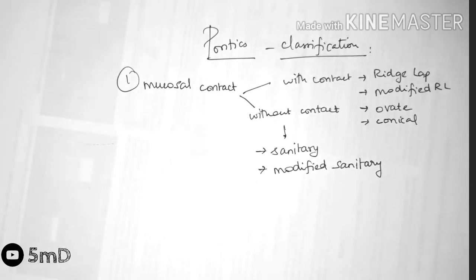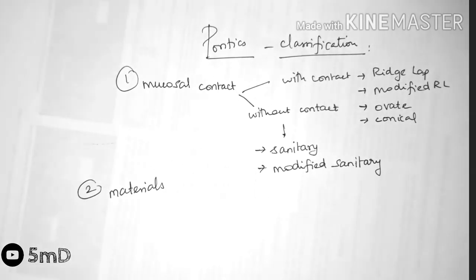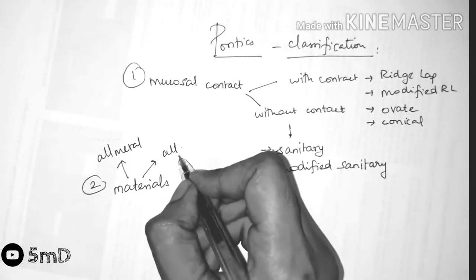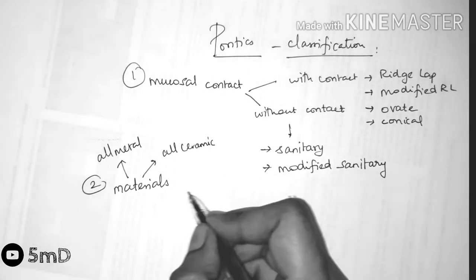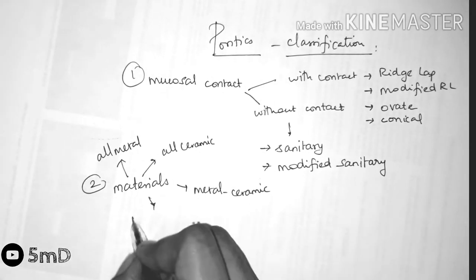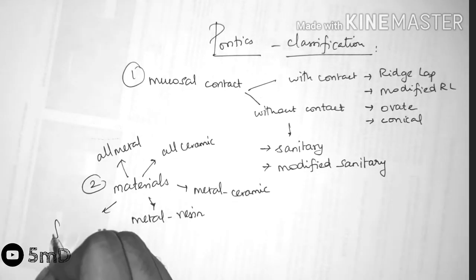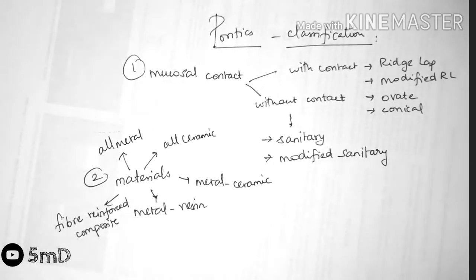Depending on the materials used for pontics, it can be either all metal pontic, all ceramic pontic, metal ceramic, or with metal and resin facing, and fiber reinforced composite pontic. Depending on the method of fabrication it can be either custom made or pre-fabricated pontic.